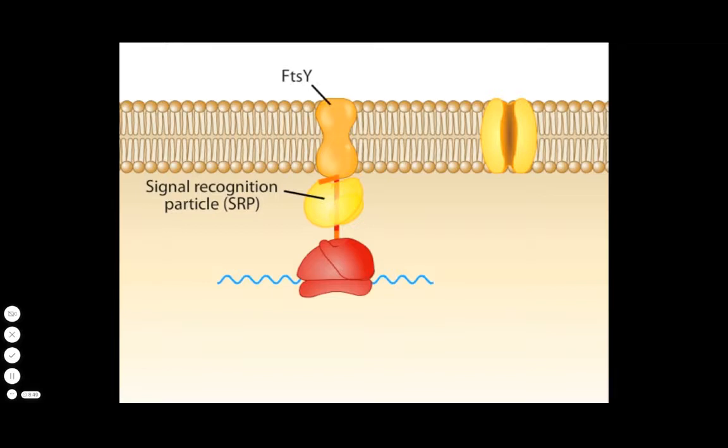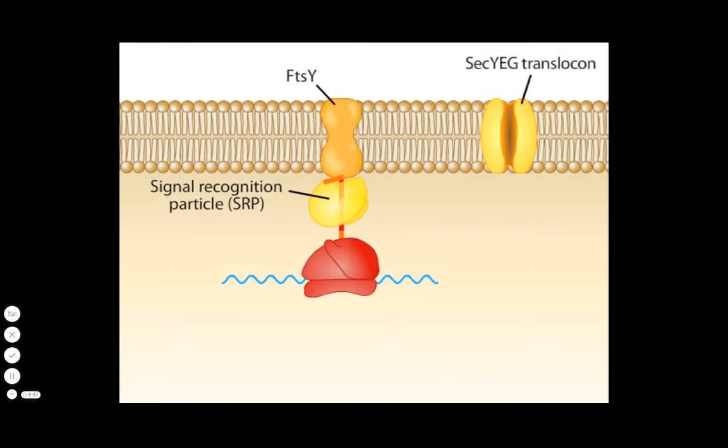Although some proteins spontaneously insert into the membrane, most use a general secretion complex composed of three proteins, collectively called the SEC-YEG translocon, embedded in the cell membrane.